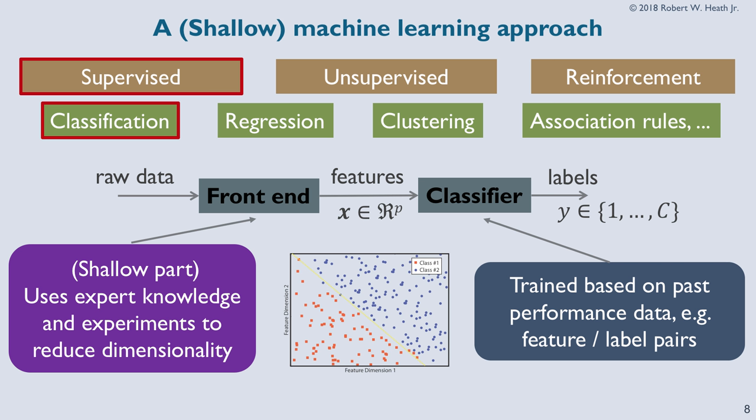I want to allow perhaps a few dimensions to give more flexibility to the classifier. The classifier takes that low-dimensional vector and assigns it a label — the class. We train that classifier based on past performance data. What I'm calling the 'shallow' part is that we're going to use expert knowledge — in particular, communication theory. I think there's a lot of debate about whether we still need communication theory if AI is going to do everything for us. In this case, we used our knowledge about how MIMO-OFDM works to design a special front end to reduce the feature vector dimensionality, in the end, to four dimensions.